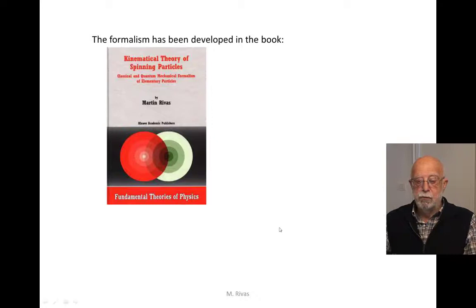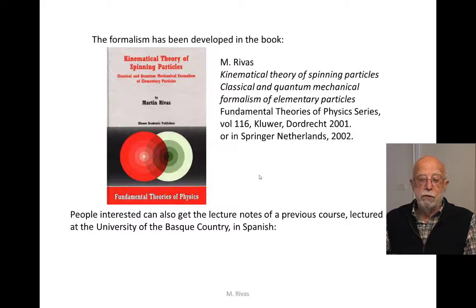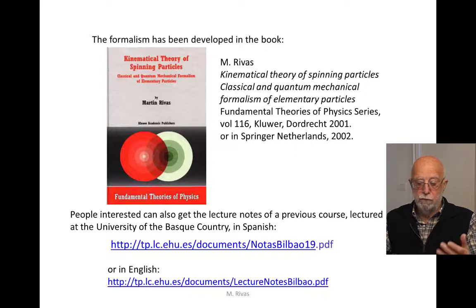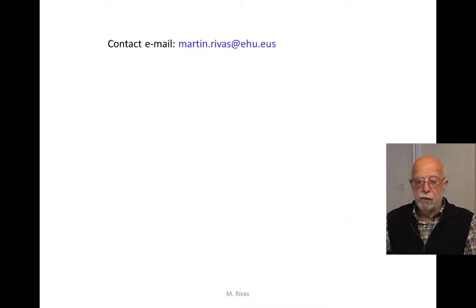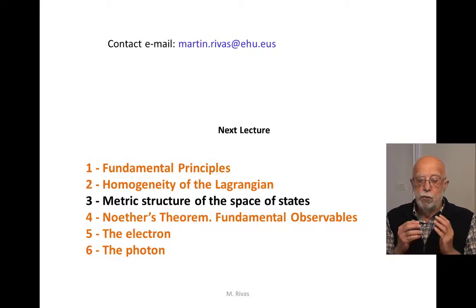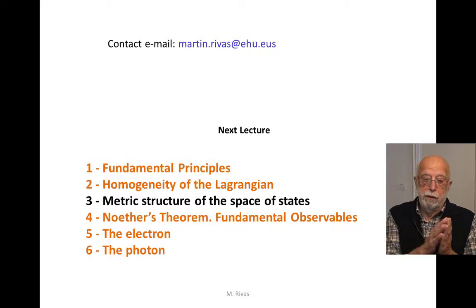All this formalism and this homogeneity is described in a monograph where the general theory of elementary spinning particles has been developed. You can also find these results in documents from a lecture course. The next lecture will be devoted to the metric structure of the kinematical space of any arbitrary system, in particular for an elementary spinning particle. Thank you very much for your attention.